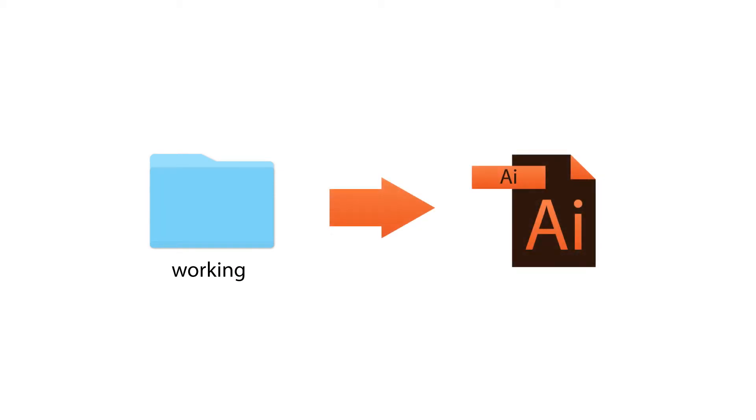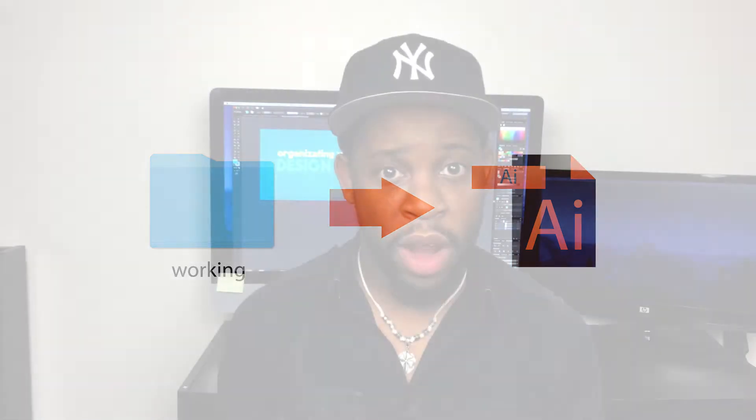Let me explain what goes in each of these folders. The working folder holds the current files that you're currently working on. So if you're currently working in Illustrator, there should be a set of files that go in this folder. These files should all be structured with a naming convention. This naming convention is: first, the name of the file; secondly, the type; the size; and the version.